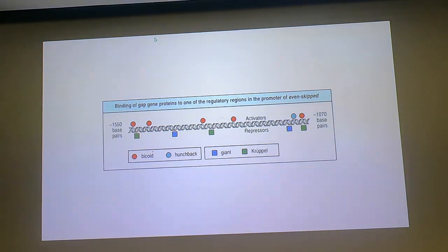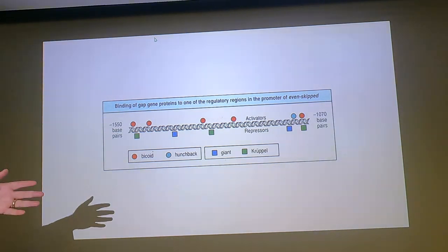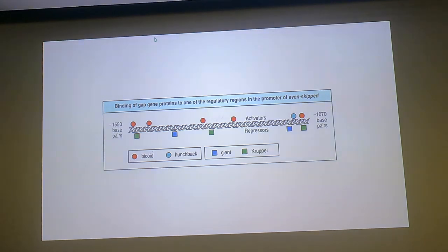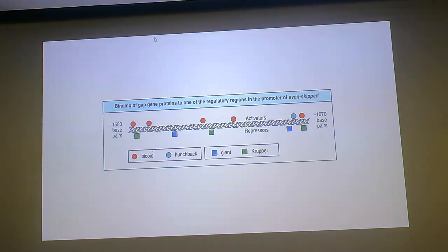Another important idea coming out of this: I called it a hierarchy, but it's not a strict hierarchy where A turns on B turns on C turns on D. It's more that A turns on B, C, and D, and then B, C, and D have interactions with one another to split up the domains and set up the pattern. A lot of really nice, complicated signaling going on here.